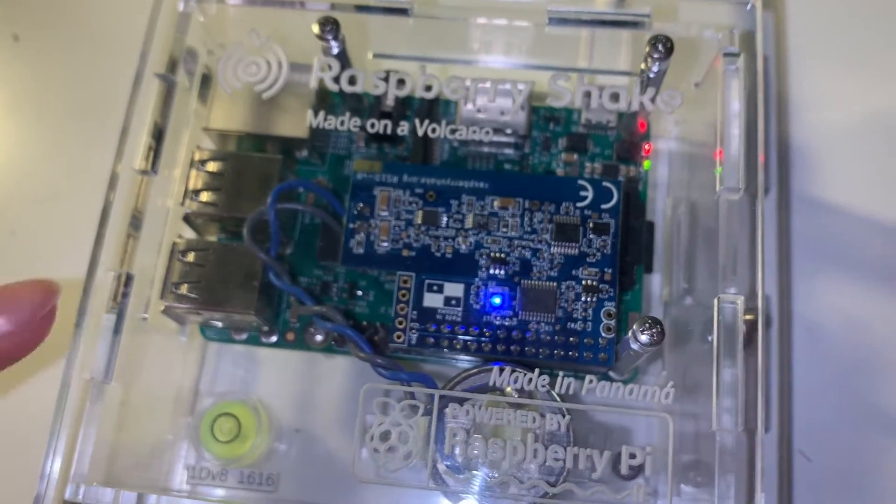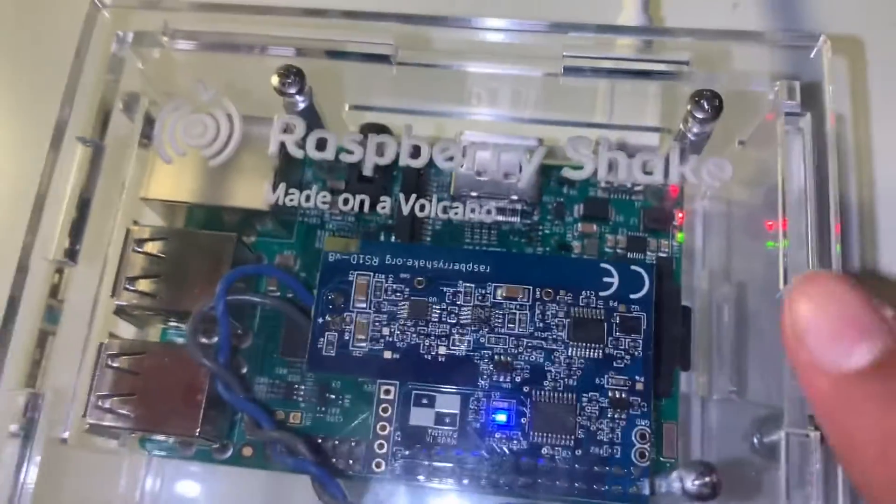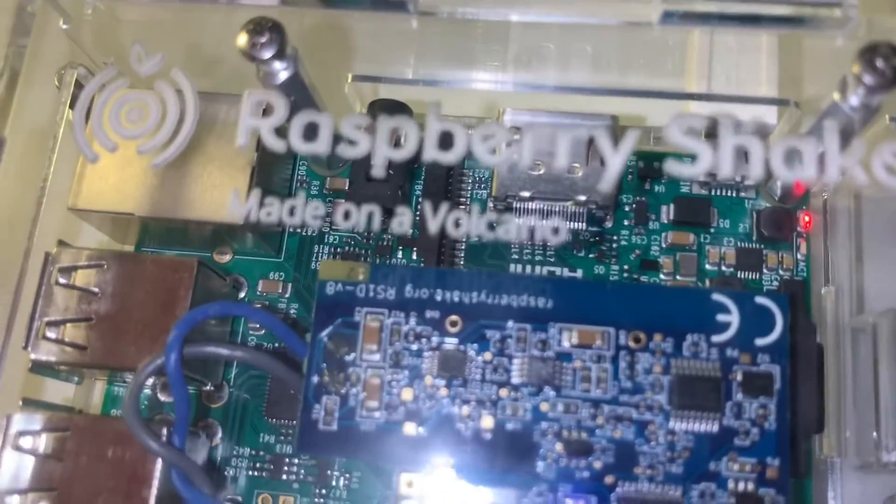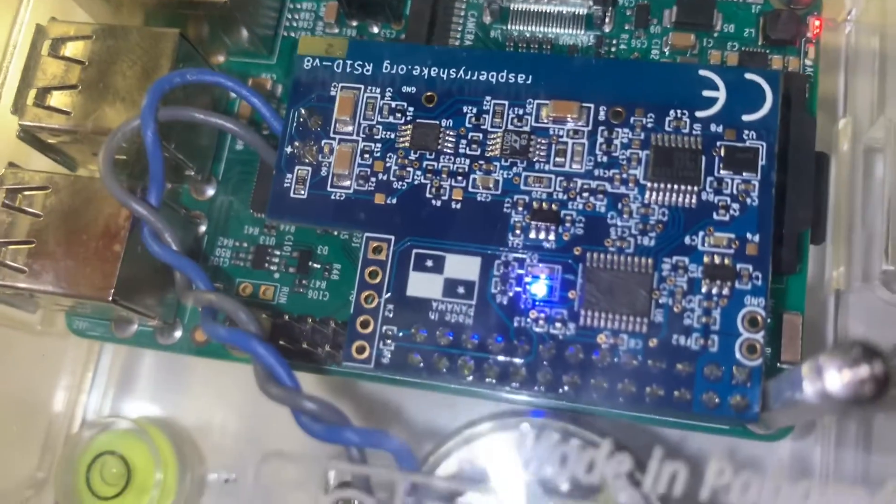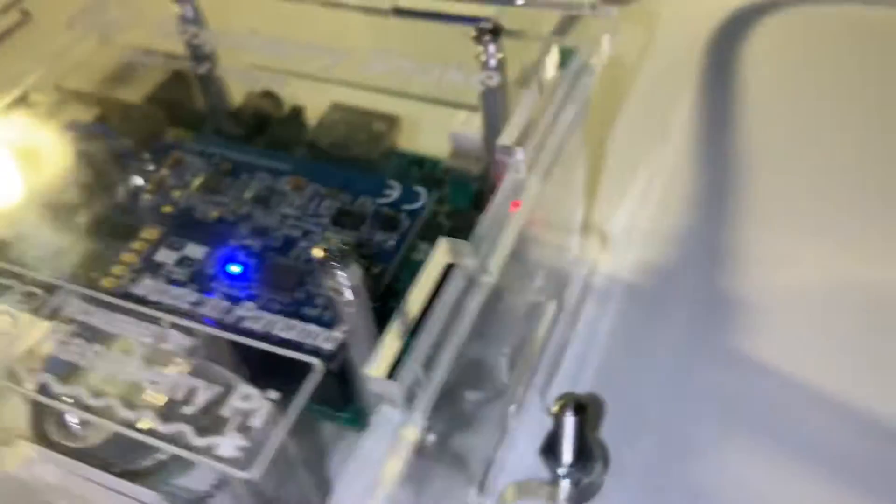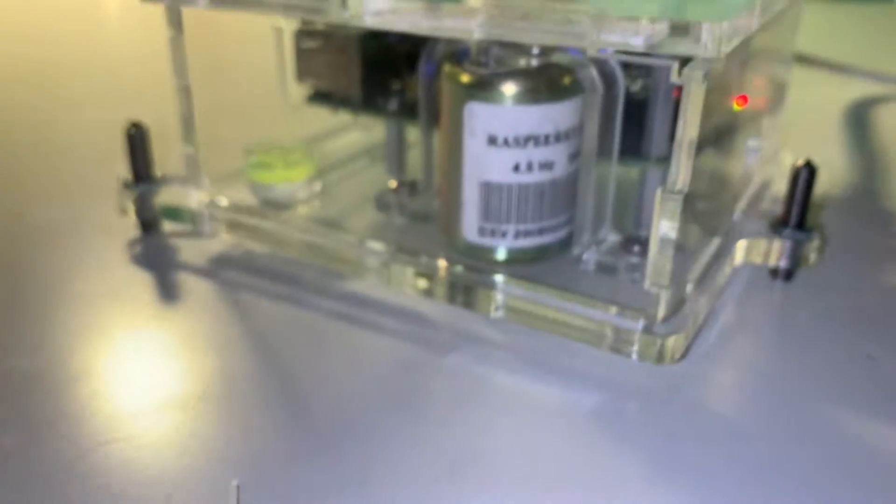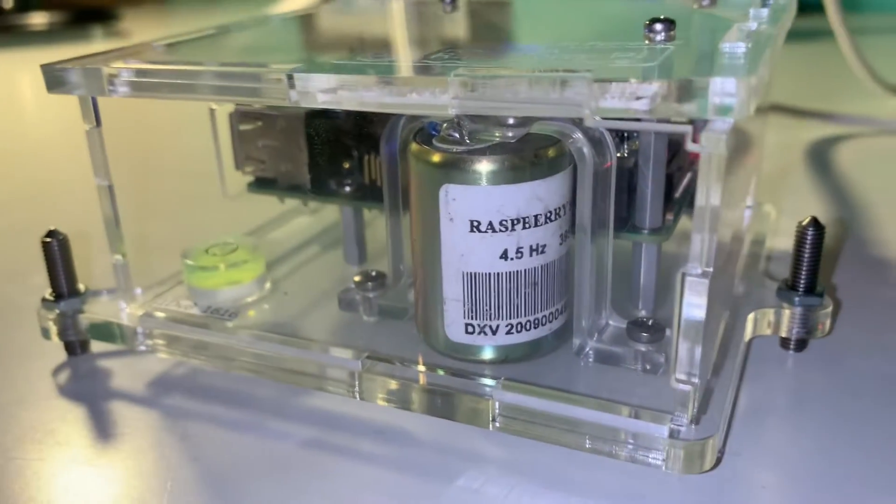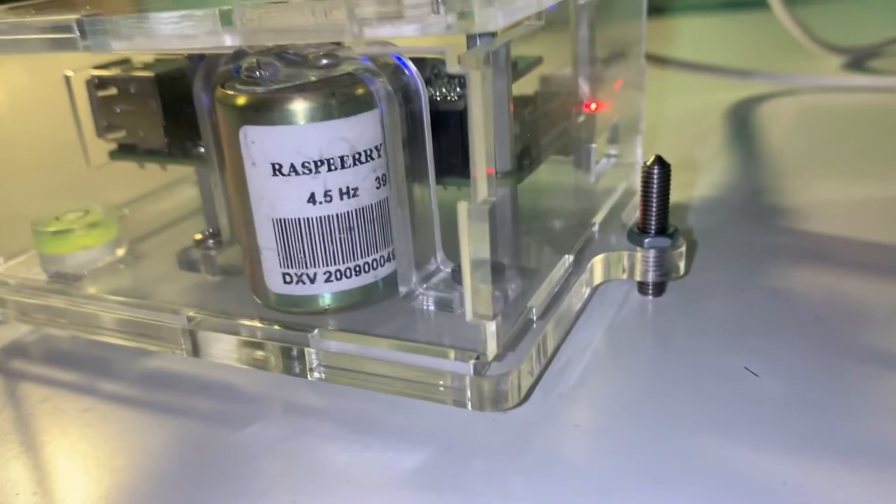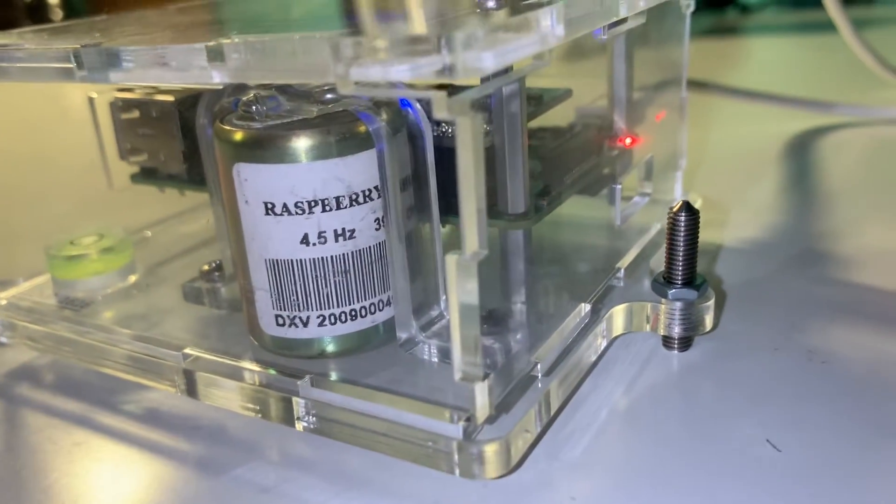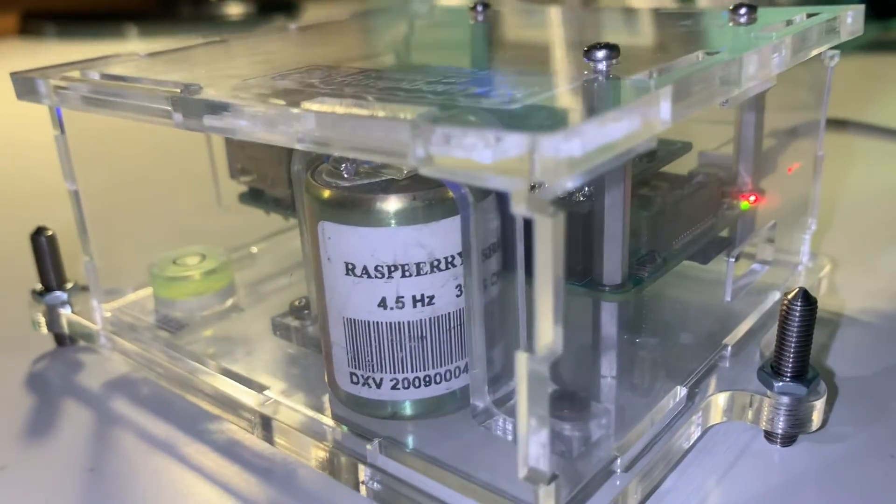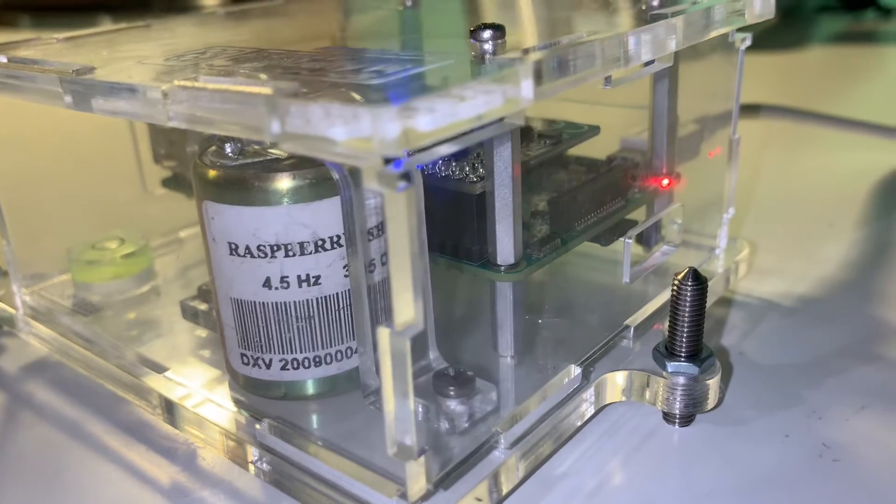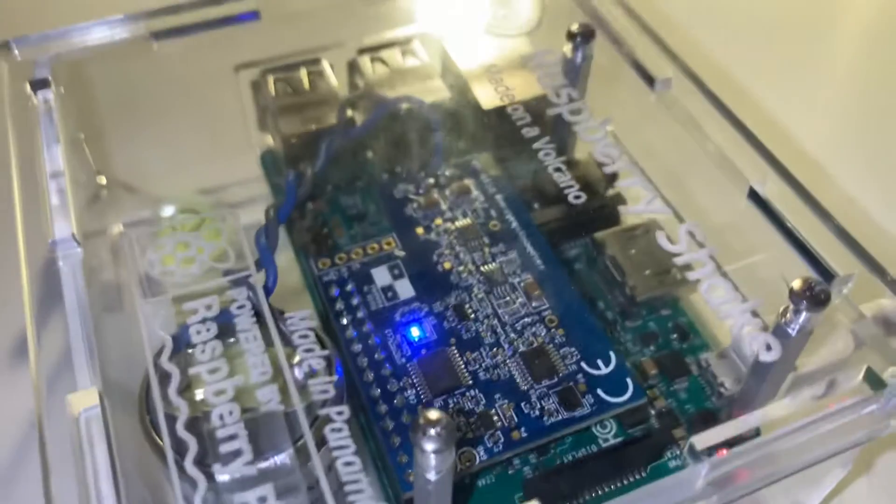It has the Raspberry Shake board, which is this green board, and then the blue board is connected to the geophone, which is our sensor. The sensor is the one that actually detects the movements. It consists of a coil, a spring, and a magnet. When the magnet moves, it creates energy, a current, and that is detected in the blue board, which is the Raspberry Shake board.